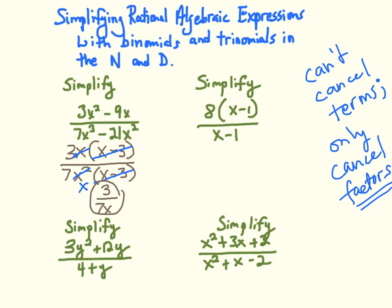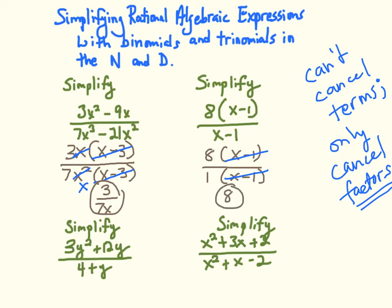In this next one, I have 8 times (x minus 1) over (x minus 1). If we consider the denominator in factored form — anything multiplied by 1 — since the numerator has a factor of (x minus 1), that enables us to cancel the (x minus 1)s, leaving us with a simplified fraction of 8.